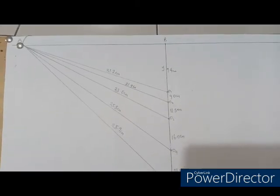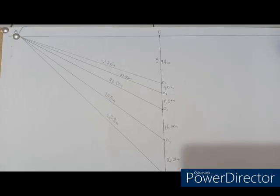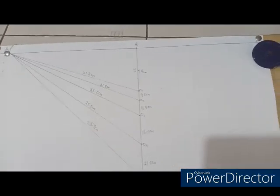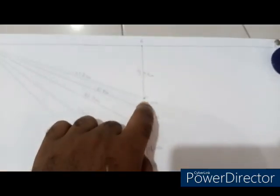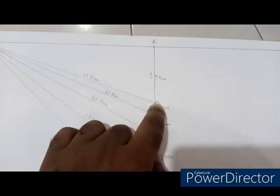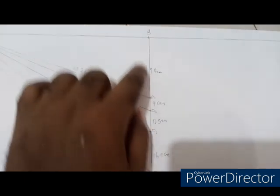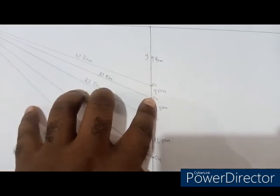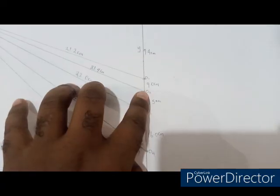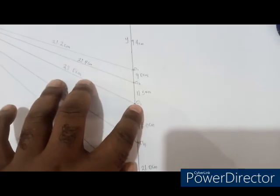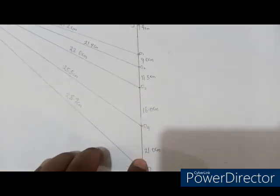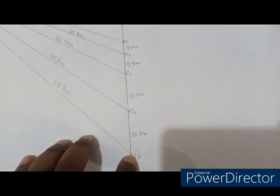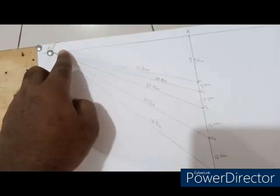So here is the final representation of the practicals. You can see that the distance from B to O1, which I call Y, is equal to 7.5 according to what I measured. And then from B to O2 here is 9.0 according to what I marked, and from B to O3 at this point is 11.5. B to O4 here is 16.0 and B to O5 here is 21.0 cm.